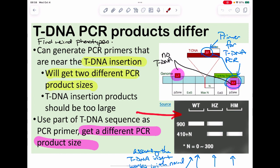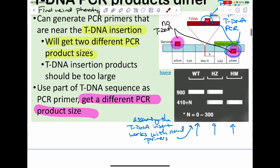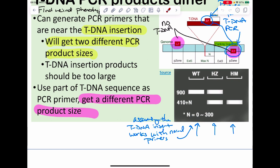Once I run the PCR, if you're wild type — homozygous normal — you'd get one particular band. If you're homozygous for the T-DNA insertion, you'd get a different size band. If you're heterozygous, you should get two different size bands: one indicating wild type (no T-DNA) and one indicating you have the T-DNA. This then just becomes a game of: can you read the gel?